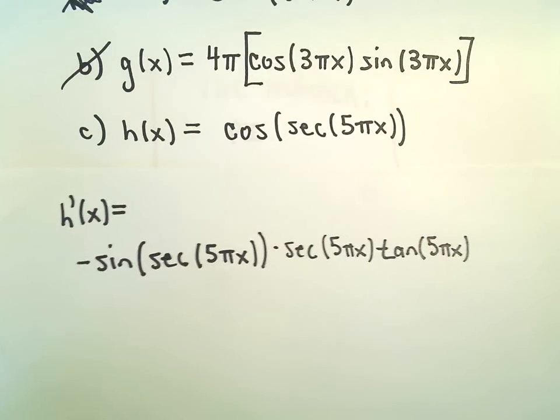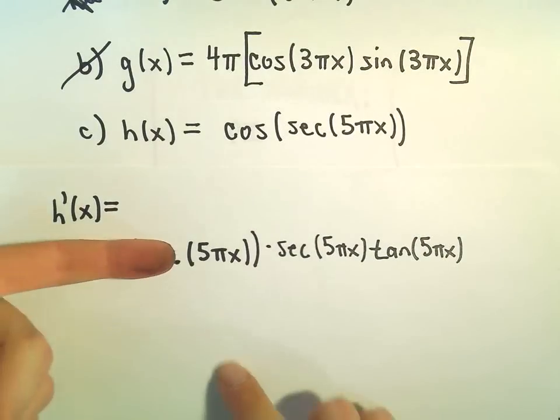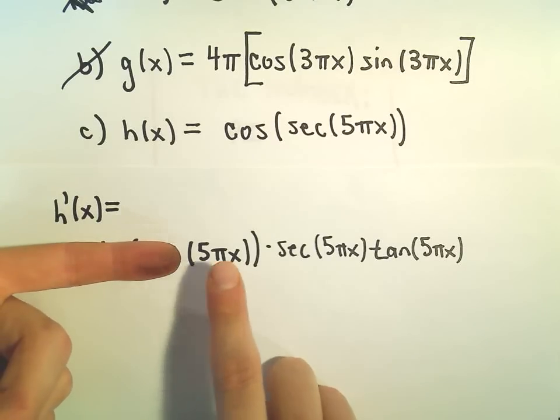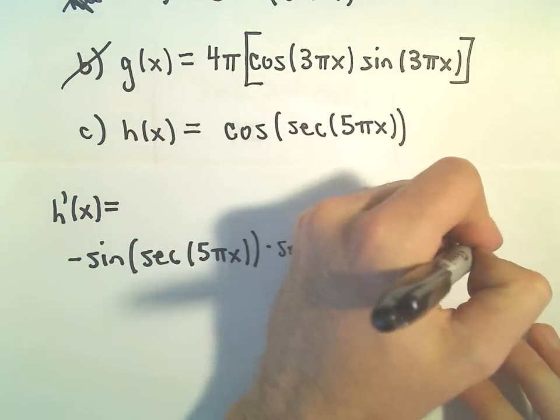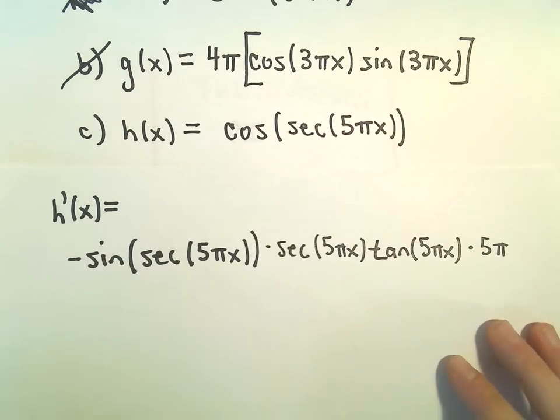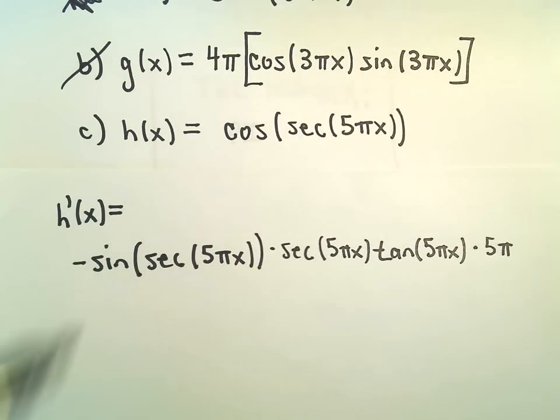And then we have to multiply by the derivative of the inside. The derivative of 5 pi times x would just be 5 pi. And that's now our derivative.